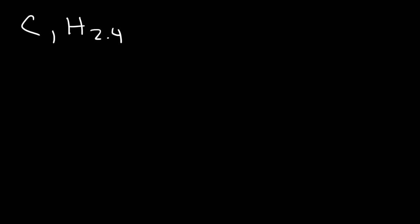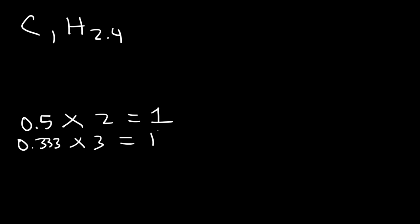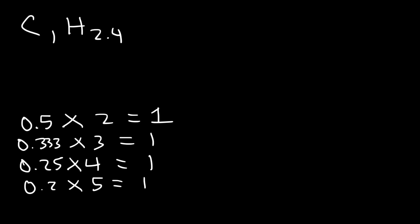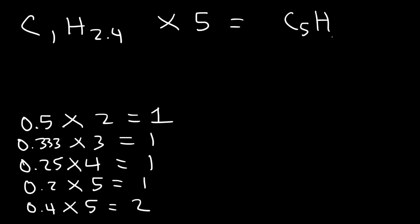We don't have whole numbers yet, but we need whole numbers. If you have a decimal of 0.5, multiply by 2. If you have 0.333, multiply by 3. If you have 0.25, multiply by 4. If you have 0.2, multiply by 5 because 0.2 times 5 is 1. And 0.4 is a multiple of 0.2, so multiplying by 5 also gives a whole number. We'll multiply by 5: 1 times 5 is 5, and 2.4 times 5 is 12.